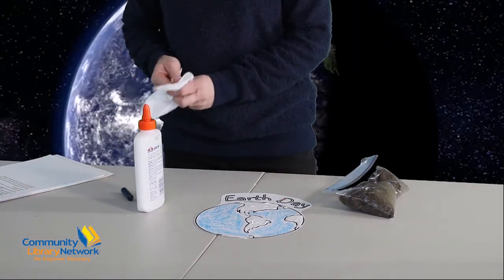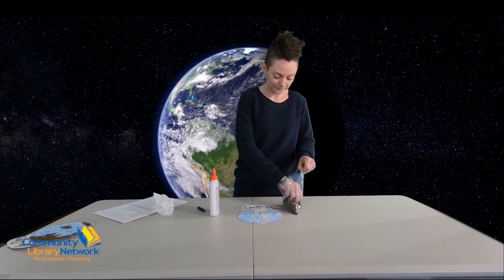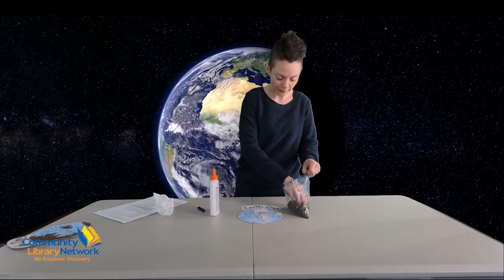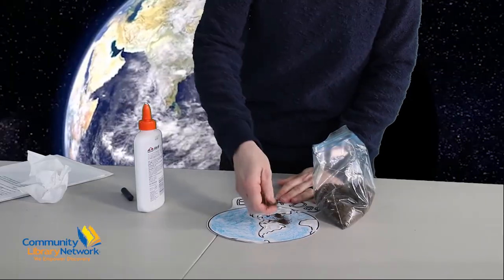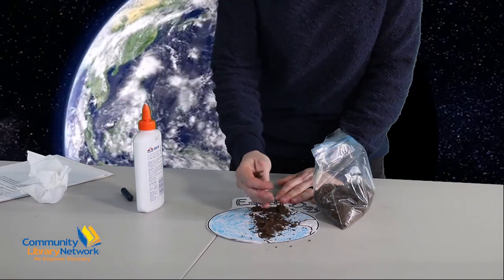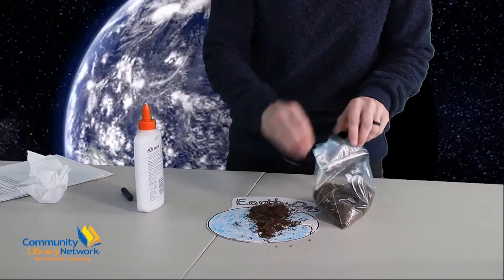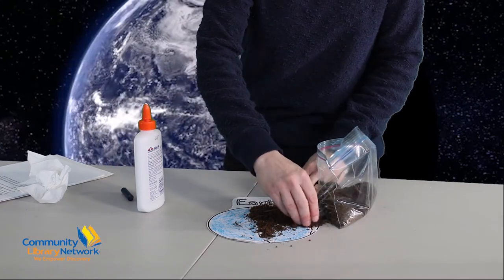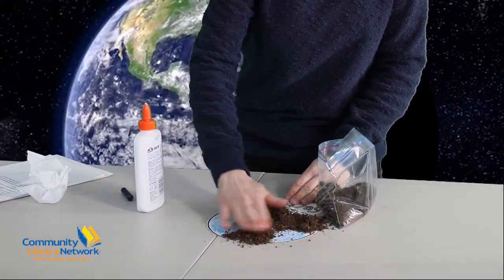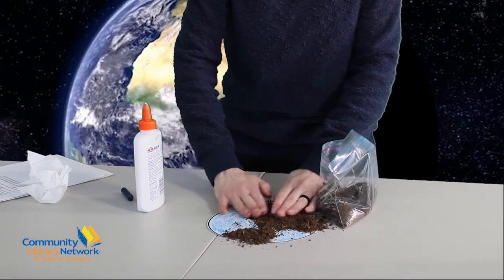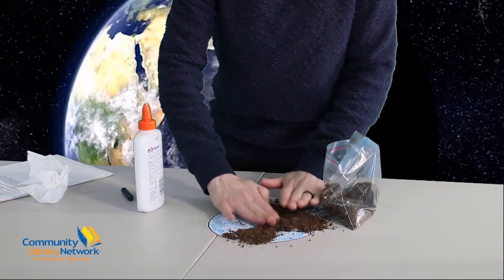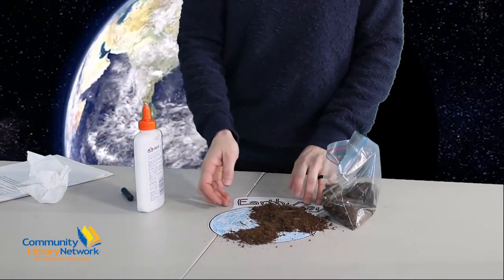And there we go. Now, you take your dirt. Get a little bit. My dirt has some grass in it and that's okay too. And you just sprinkle it all over. Make a nice dirty mess. All right. After you have that all covered up, all your glue is covered, you can let that sit for a minute. And then you'll want to take this and shake the extra dirt off.